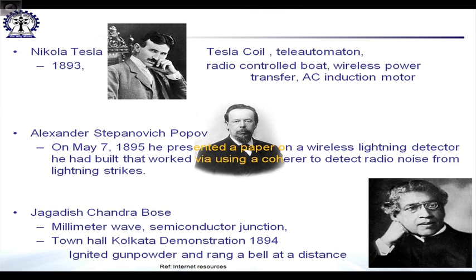Following him, Alexander Popov did his experiments around 1895 and presented a paper on wireless lightning detectors built using the coherer. The coherer was a famous part of the receiver used by several people including Marconi. Around 1894 in Calcutta, scientist Jagadish Chandra Bose demonstrated radio waves at the Town Hall in Kolkata. One of his biggest contributions in that era was millimeter waves and the concept of semiconductor junctions. In his demonstration, he ignited gunpowder and rang a bell at a distance.